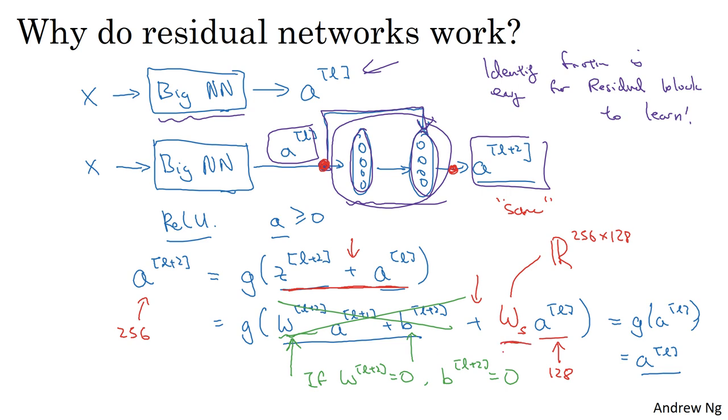And a few things you could do with Ws. It could be a matrix of parameters to be learned. It could be a fixed matrix that just implements zero padding. So it takes AL and then zero pads it to be 256 dimensional. And either of those versions could work.